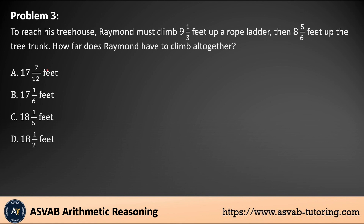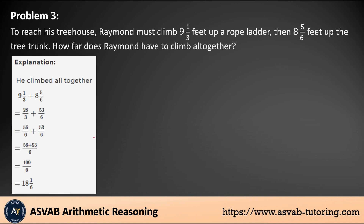Problem number three: to reach his treehouse, Raymond must climb 9 and 1/3 feet up a rope ladder and then 8 and 5/6 feet up the tree trunk. How far does Raymond have to climb altogether? The keyword is 'altogether,' which means you have to add them. In order to add fractions, first convert the mixed numbers into improper fractions: 9 and 1/3 becomes 28 over 3, and 8 and 5/6 becomes 53 over 6.